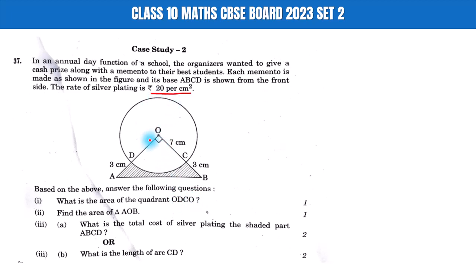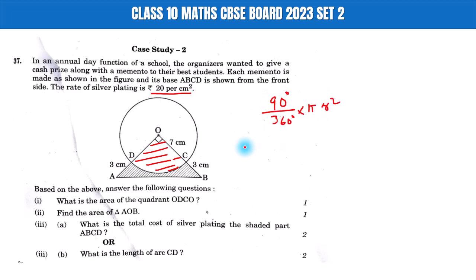Quadrant means the fourth part of a circle. To find this area: 90 degrees divided by 360 degrees, multiplied by pi r squared. This gives 1 by 4 multiplied by pi, that is 22 over 7, and the radius is 7. So 1/4 × (22/7) × 7 × 7.